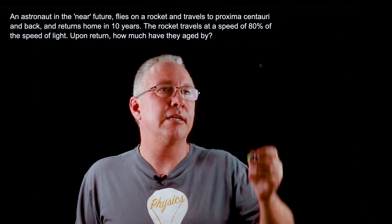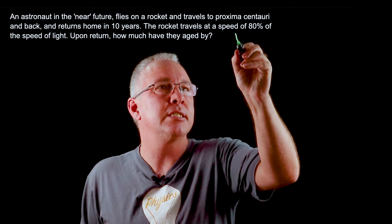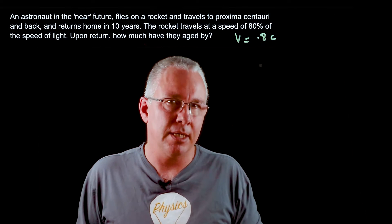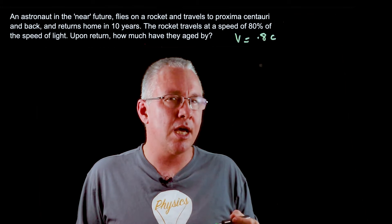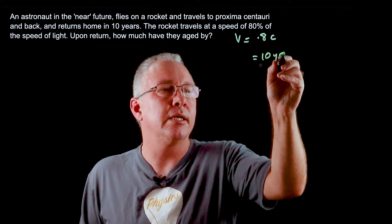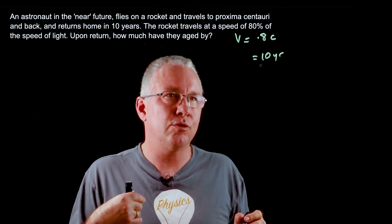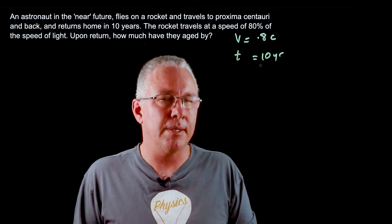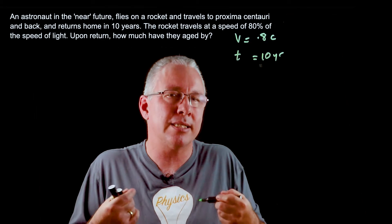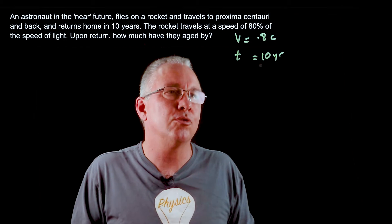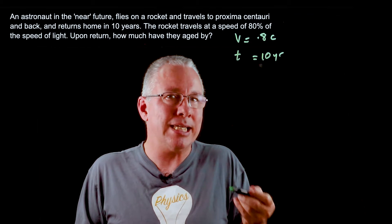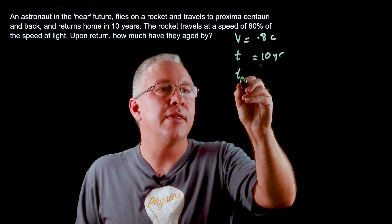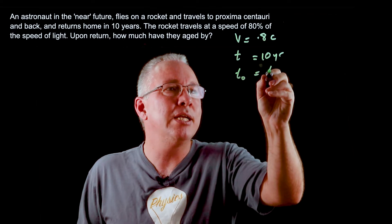We're told a couple of things. First, the velocity is equal to 80% of the speed of light, so we write it as 0.8c. Secondly, we're told a time of 10 years. This is critical — this is 10 years relative to us, so this is not what we call the proper time; this is the dilated time. It's what we observe because we're outside the frame of reference of the astronaut. We're asked: what is the age of the astronaut when they return? That is their proper time, and we don't know that.